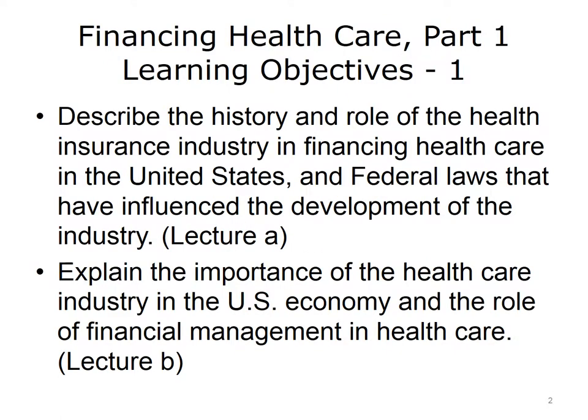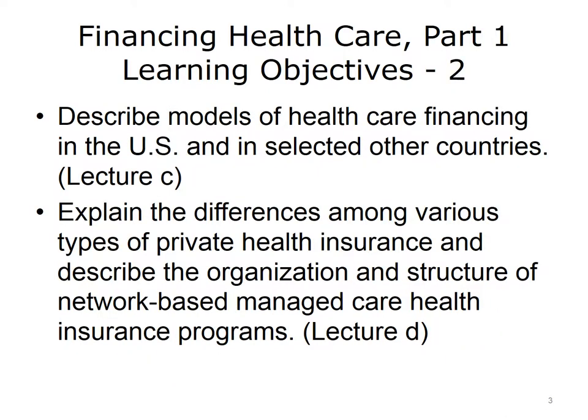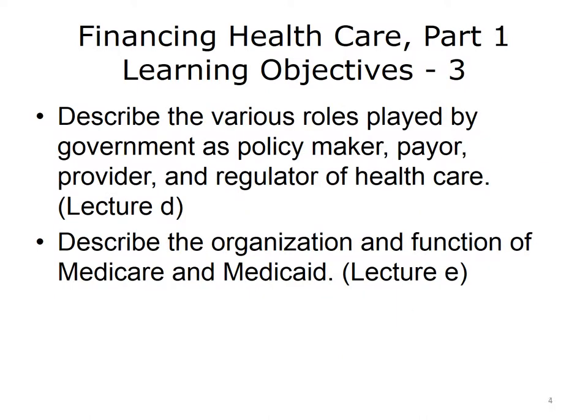The objectives for Financing Healthcare Part 1 are: describe the history and role of the health insurance industry in financing healthcare in the U.S. and federal laws that have influenced the development of the industry; explain the importance of the healthcare industry in the U.S. economy and the role of financial management in healthcare; describe the models of healthcare financing found in the U.S. and in selected other countries; explain the differences among various types of private health insurance and describe the organization and structure of network-based managed care health insurance programs; and describe the various roles played by government as policymaker, payer, provider, and regulator of healthcare, and describe the organization and function of Medicare and Medicaid.